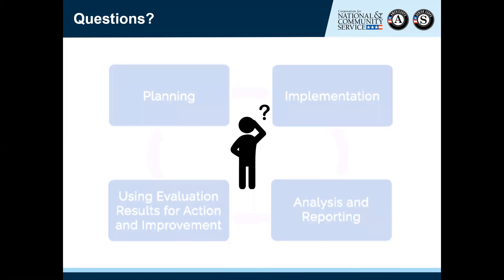Question: Can you clarify that evaluation plans are due with the recompete application? Yes, that is correct. The initial version of your evaluation plan should be entered into the text of the recompete application in the evaluation summary or plan field. Likely, if you are asked to revise and resubmit, you'll do that in a word processing document tracking changes and submit it as an attachment to the evaluation plans mailbox. Initial evaluation plans are due with the recompete application at your application deadline; revised plans are submitted outside of the application.